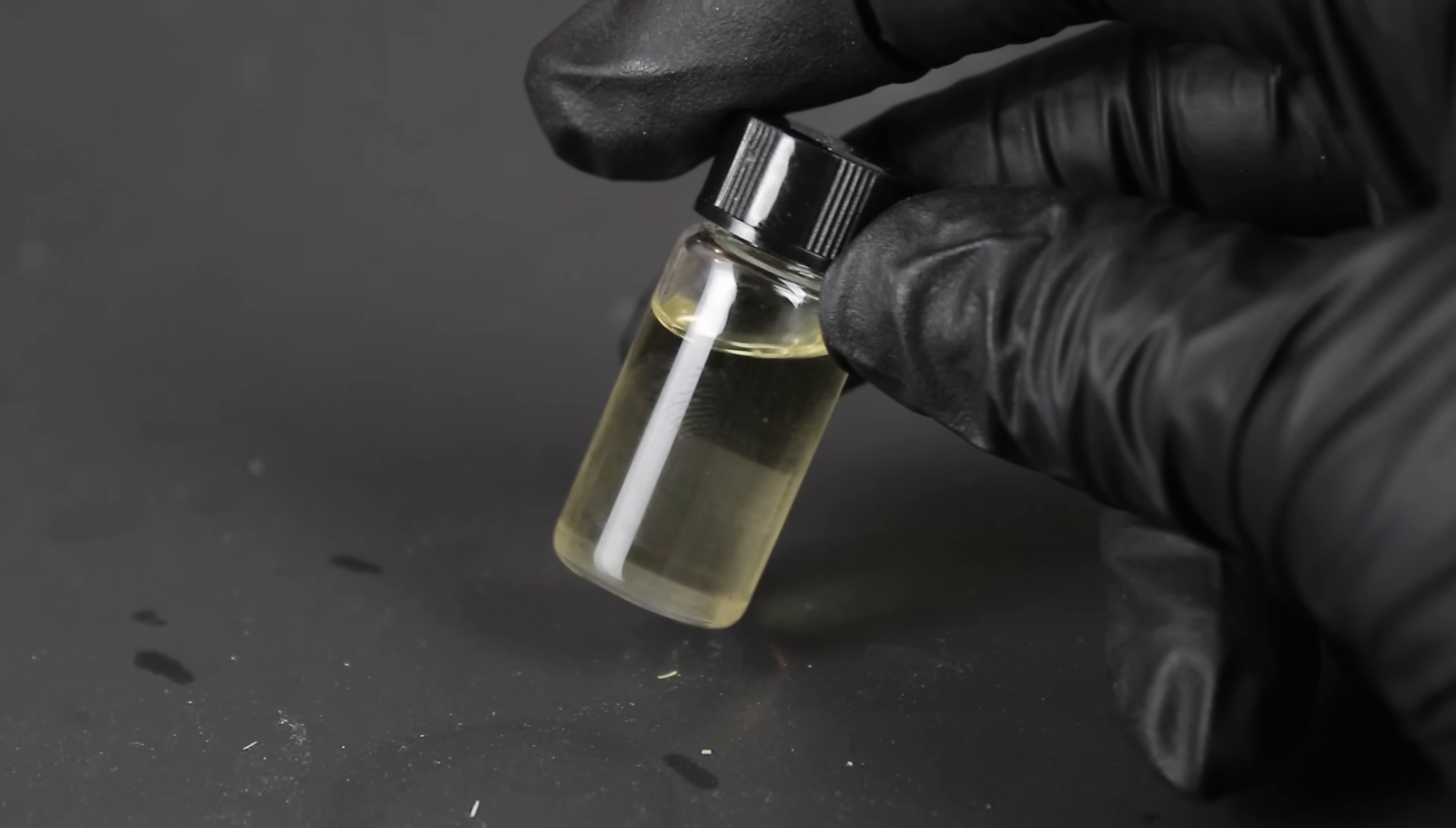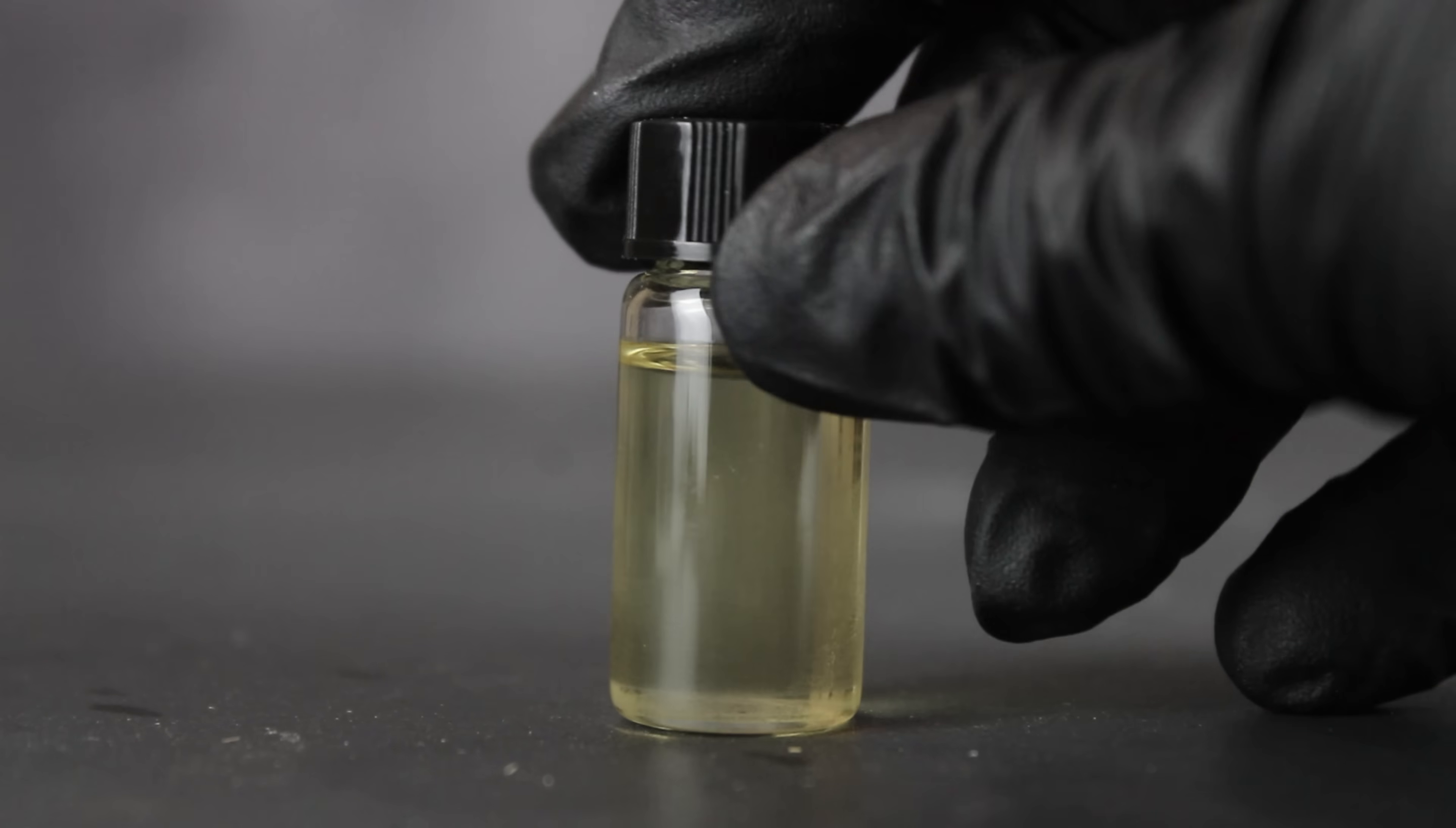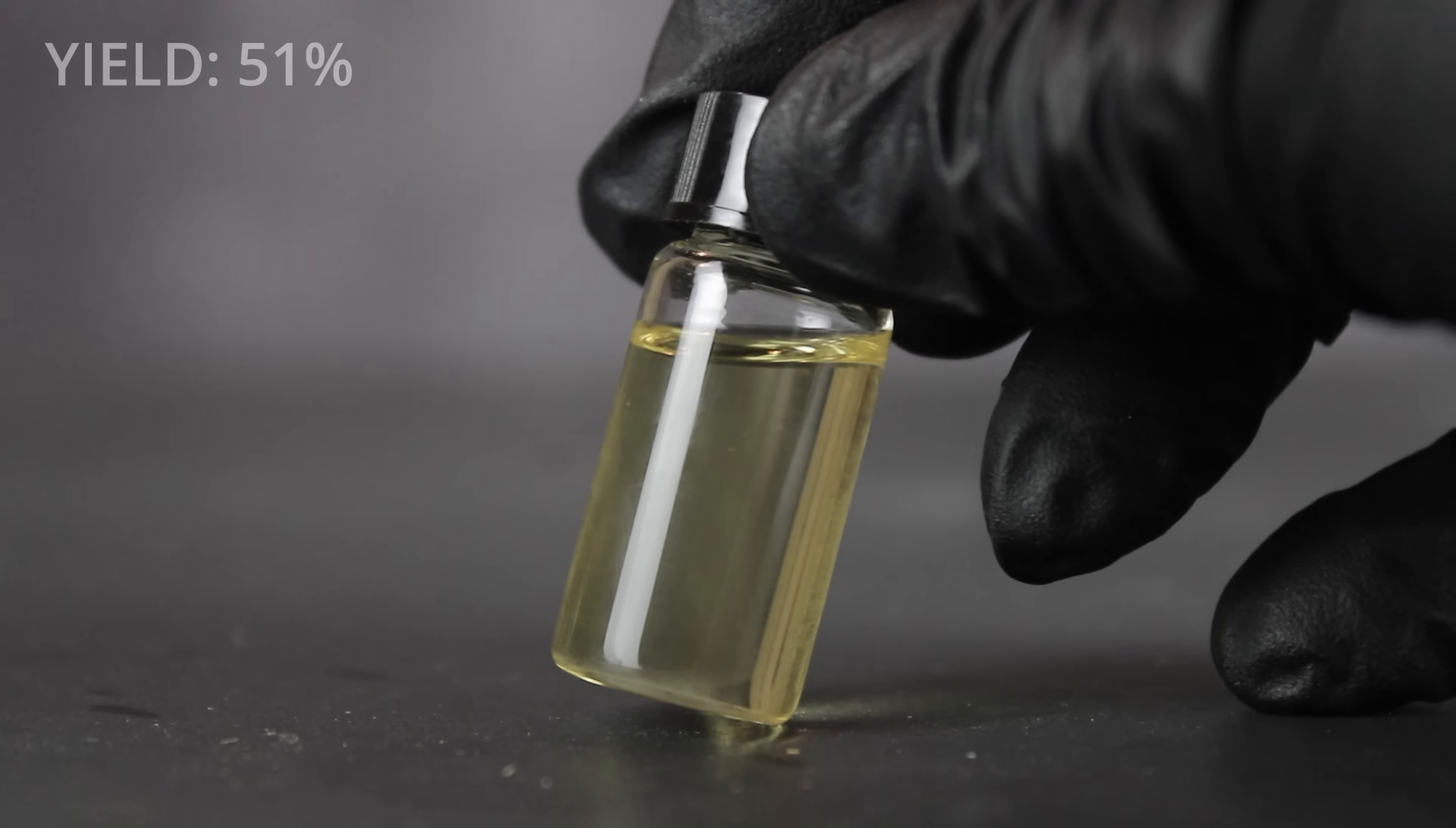In total, I obtained 5.25 grams of clean, slightly yellow nikethamide. Mind you, this was from working up only 6 grams of my original material, which weighed 8.5 grams, so my total theoretical weight would have been something like 7.4 grams. This comes out to a respectable 51% yield, which I'm fairly happy with.